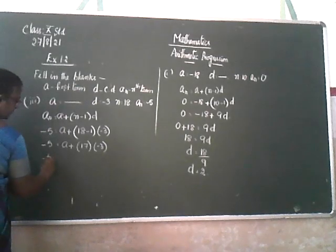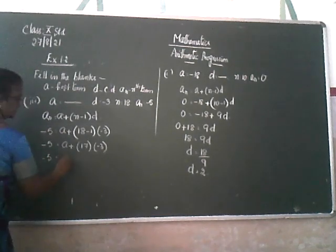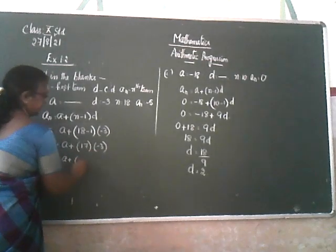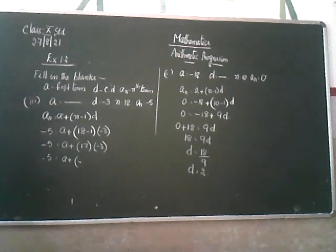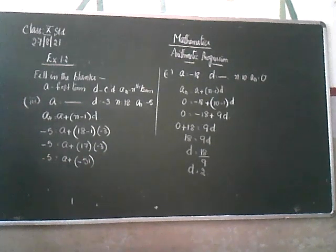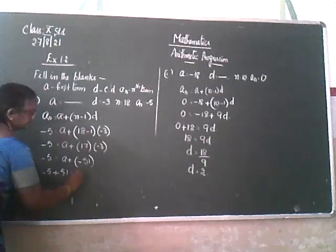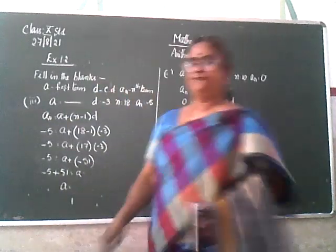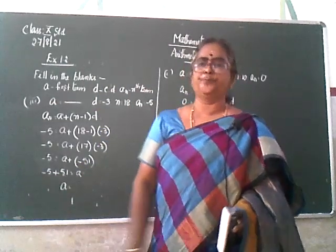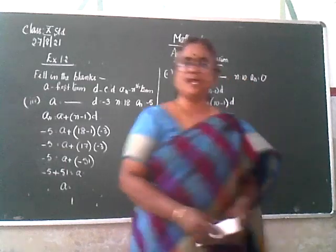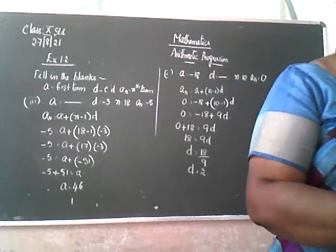So minus 5 is equal to A plus, and plus into minus is minus, 17 threes are 51. Now transpose minus 51 to the other side — it will become plus 51. So A is equal to 51 minus 5, which is 46. So A is 46.